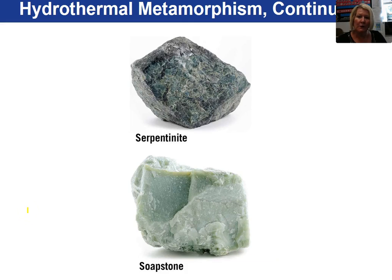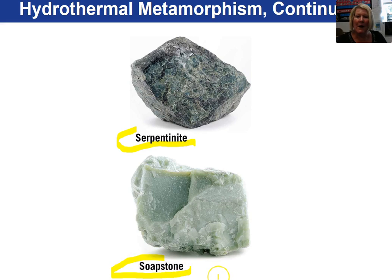Two rocks that are the product of metamorphism on the ocean floor due to hydrothermal metamorphism are serpentinite and soapstone. These are hydrated rocks, meaning they have water in their atomic structures.